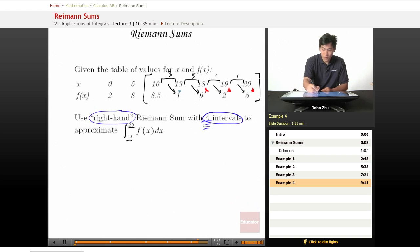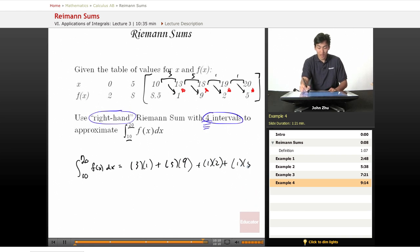Because it's a right-hand Riemann sum, so the integral from 10 to 20 of f(x)dx equals, just go ahead and plug in, 3 times 1 plus 5 times 5 plus 9 plus 1 times 2 plus 1 times 5.